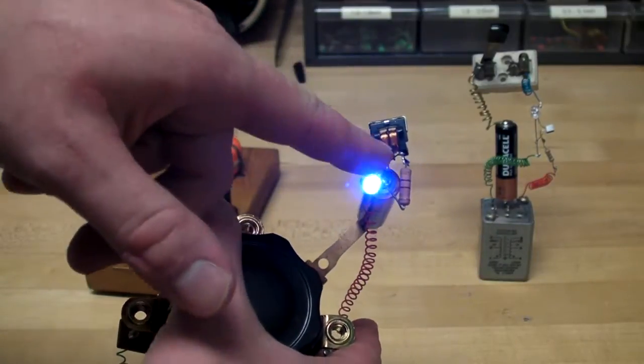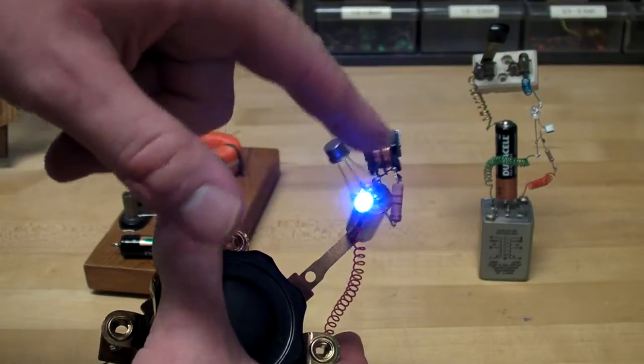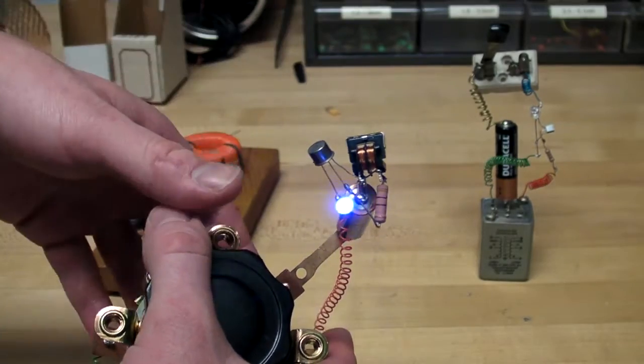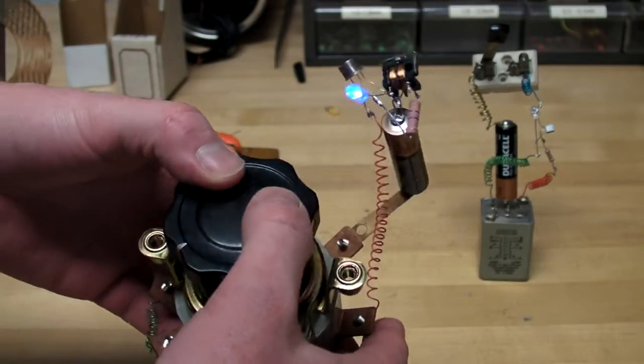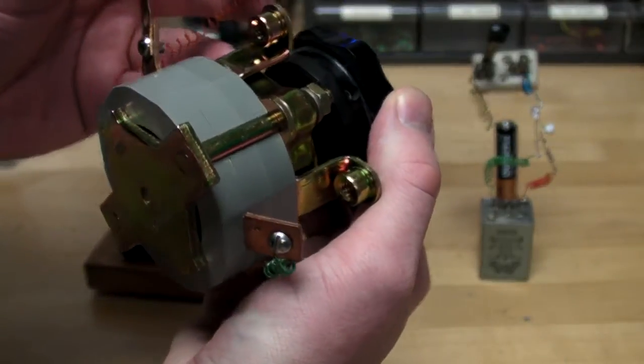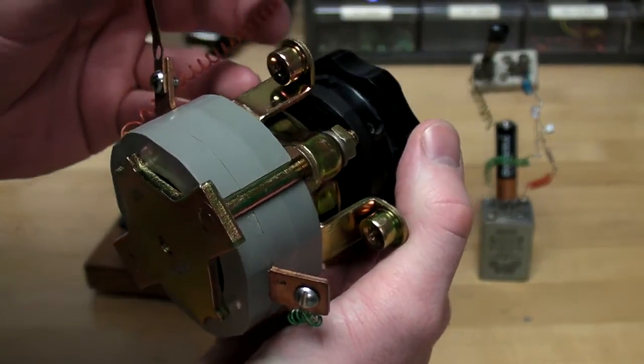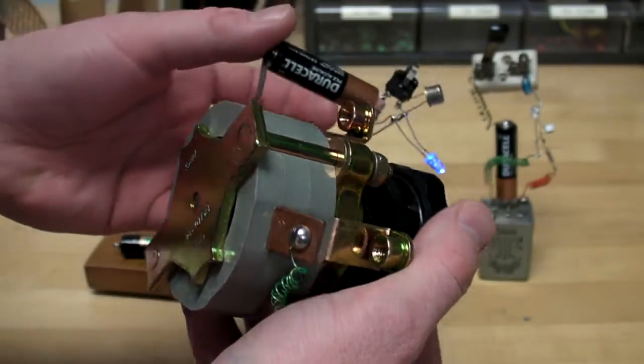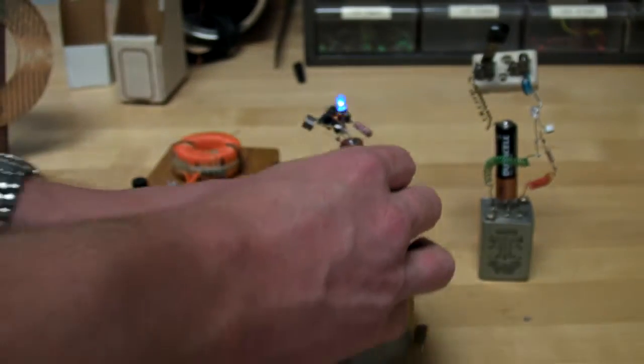I have, the transformer is actually a common-mode choke that I got off of a small switching supply. And the transistor, what is that? A vintage 78 vintage 2N5662 that I had laying around.